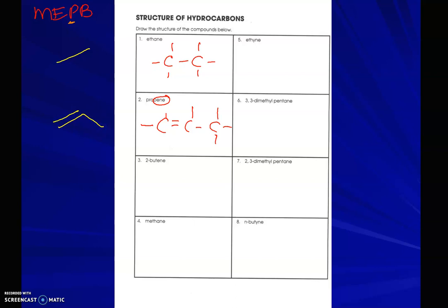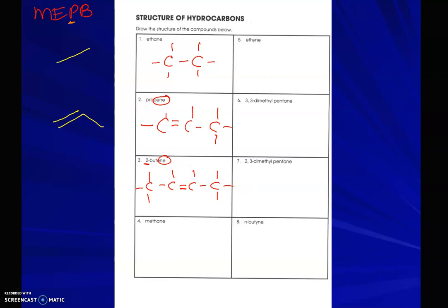Butene: four carbons — 1, 2, 3, 4 — with a double bond on carbon 2. I put three hydrogens on carbon 1, one on carbon 2, one on carbon 3, and three on carbon 4. The organic chemist's way would be a 4-carbon zigzag with the double bond between carbons 2 and 3.